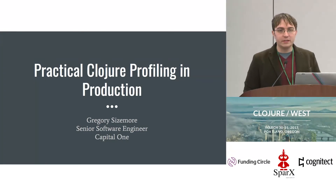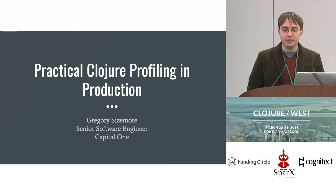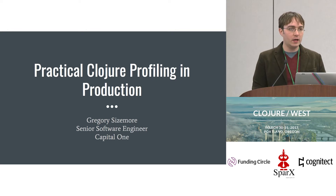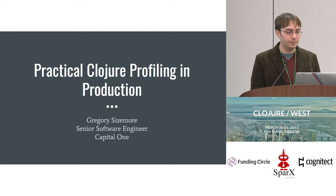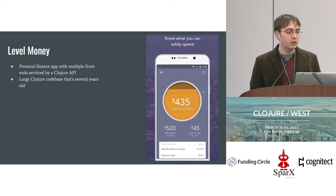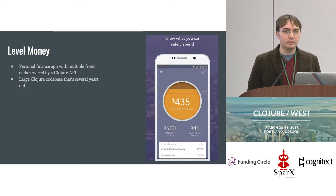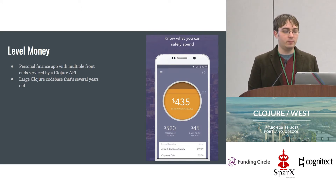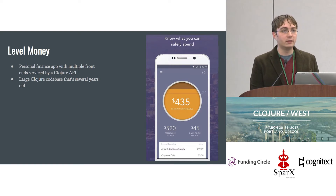Hello, my name is Gregory Sizemore. I'm a senior software engineer at Capital One, and I'm here to talk today about practical Clojure profiling in production. The specific project I work on at Capital One is an app called Level Money. It's a personal finance app that helps you track your budget and your spending, and it has multiple frontends — iOS, Android, web — serviced by a fairly large Clojure API. The codebase has been around for a few years now.